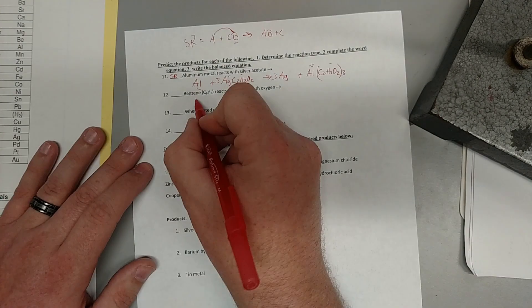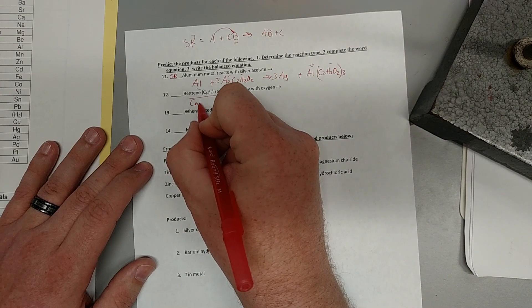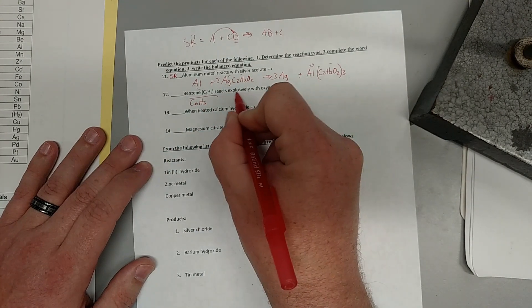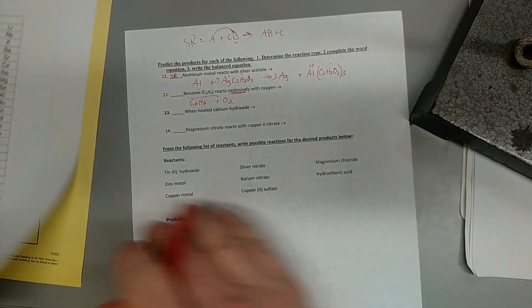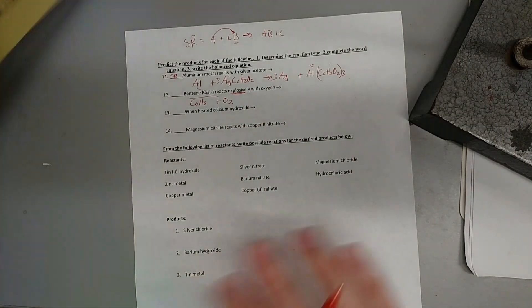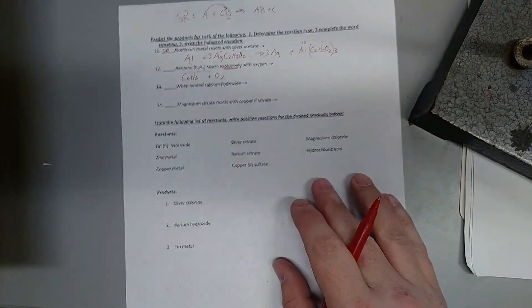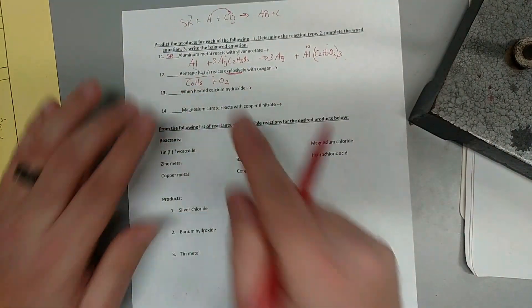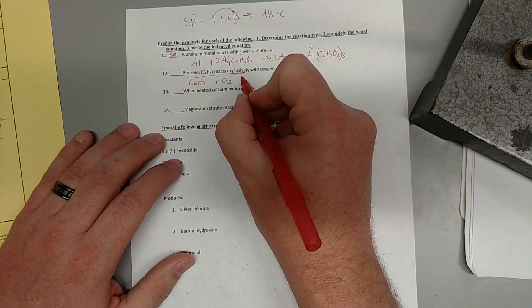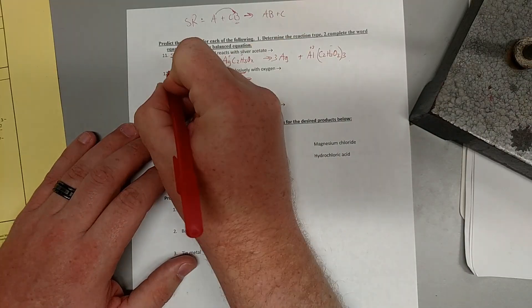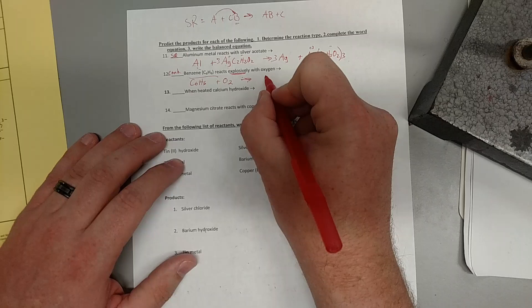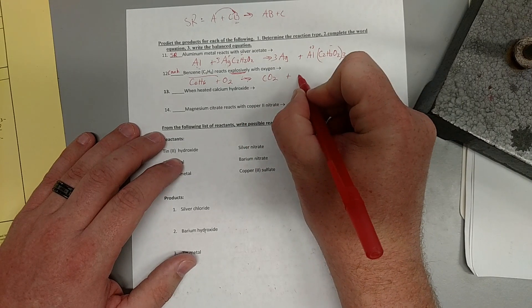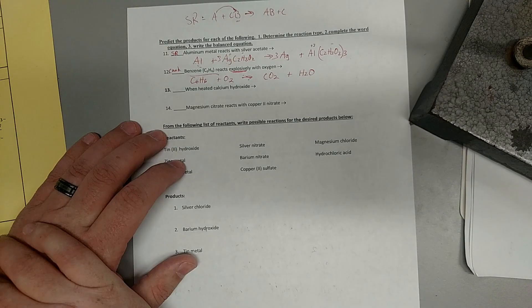So here we have benzene, C6H6 reacts explosively, there's a big clue, with oxygen. Oxygen is one of our diatomics. So we have C and H, that's called a hydrocarbon, and we have oxygen, and this is a combustion reaction. And all combustion reactions produce the same thing.